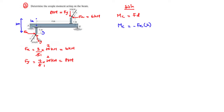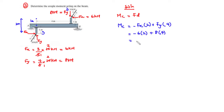So the couple moment equals negative 6 times 2 plus 8 times 4. Negative 6 times 2 equals negative 12. 8 times 4 equals 32. Negative 12 plus 32 equals 20 kilo Newton meters. Since we have a positive value, the couple moment acts in the clockwise direction.